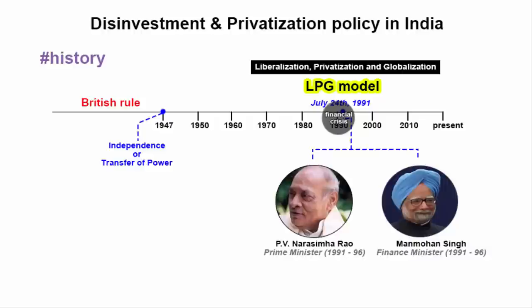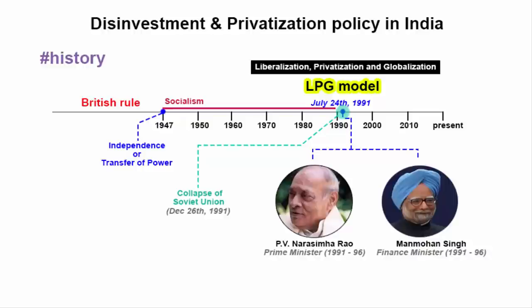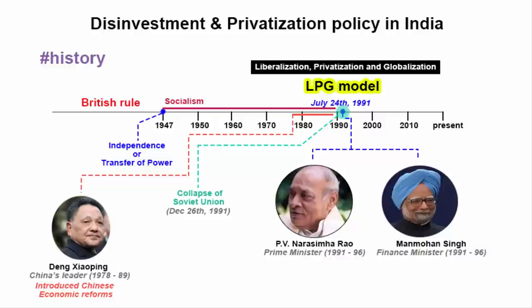Since 1947, socialism was the main guiding principle behind the Indian government's initial economic and social policies. It was only in the early 1990s when India moved towards a more market-based economy. The Soviet Union was collapsing at that time, proving that more socialism could not be the solution for India's economy. Meanwhile in China, Deng Xiaoping had revolutionized China by introducing market-friendly reforms. That is how Indian politicians also turned in the direction of the market.